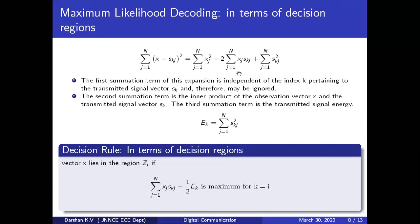After removing the first term, what remains are: minus two times sigma of something, plus sigma of s_{kj}^2. The third term — sigma(j=1 to N) of s_{kj}^2 — recalling the geometrical interpretation of signals, this is the energy of signal s_k(t), written as E_k. For each message, E_k would be different since all signals may not have the same energy.